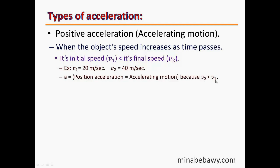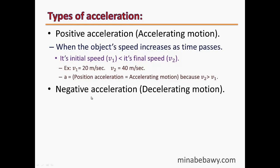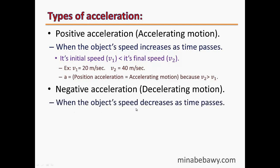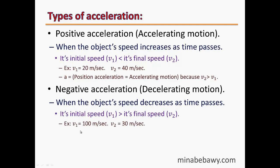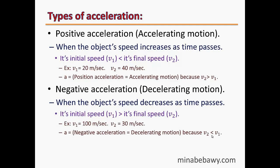The second type of acceleration is negative acceleration, or decelerating motion. This occurs when the object's speed decreases as time passes — when its initial speed V1 is greater than its final speed V2. For example, if a car's initial speed is 100 m/s and its final speed is 30 m/s, then this is negative acceleration or decelerating motion. This happens when a moving car's driver presses the brake, so speed decreases gradually until it may stop.